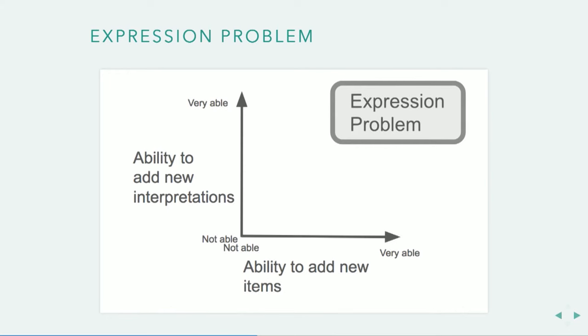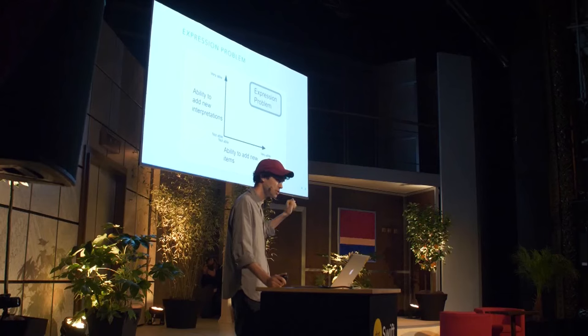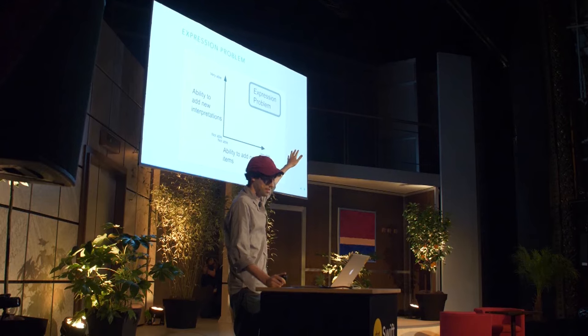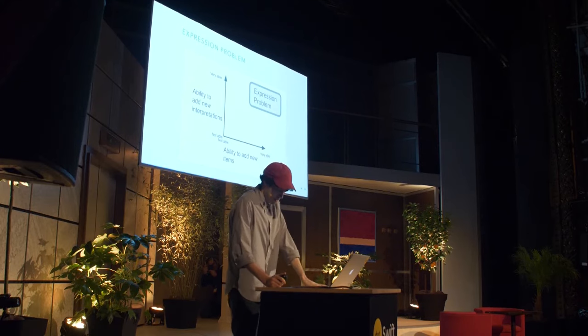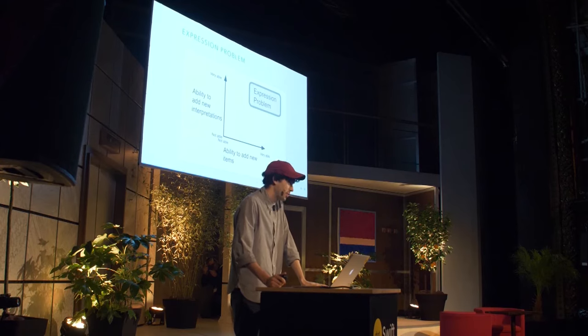So the expression problem: if you're a chart person, maybe this will help. On the y-axis, the ability to add new interpretations — changing the meaning of a view hierarchy, being able to render on iOS, macOS, web, et cetera. On the x-axis, the ability to add new items, like creating a map view. The expression problem wants both: all the way up and to the right. So enums won't work, subclassing doesn't work.